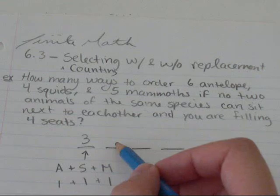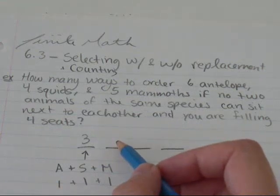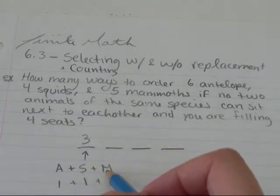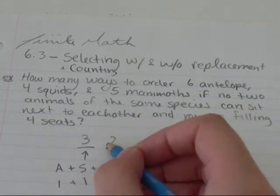In the second slot, let's say I chose an antelope. In the second, I can have a squid or a mammoth. So I've got two options there.